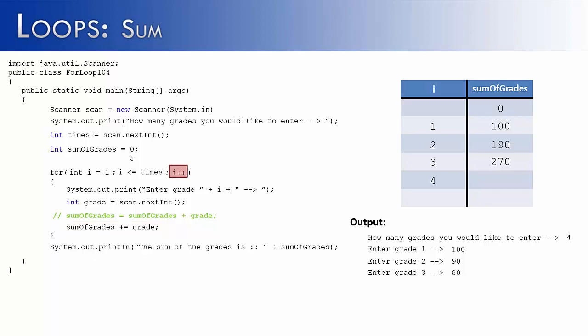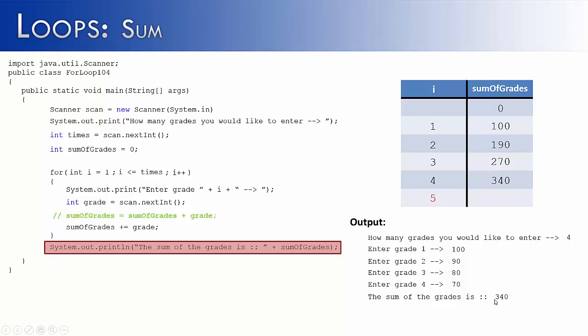Increment i again, i is four. Check the condition, four is equal to four, therefore it enters the loop. Ask the user again to enter the grade, what is grade four? We're going to say 70, so 70 plus 270 is now 340. We increment i again, this is going to be the last time, because the condition is going to be false. i is not less than or equal to times. So because the condition is false, we're going to go to the system out print line statement, which is going to say the sum of the grades is 340. So we see how in this loop we have used sum of grades to accumulate the grades and then print it out once the loop is finished.